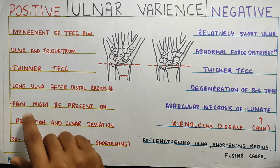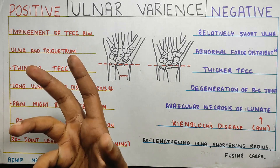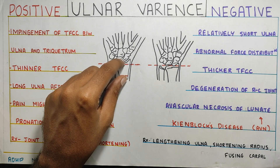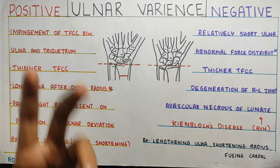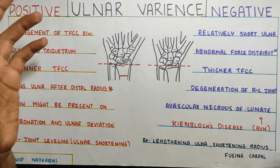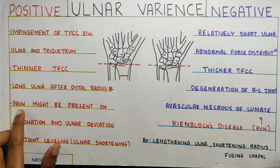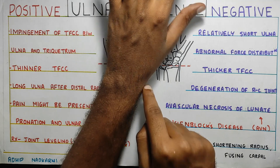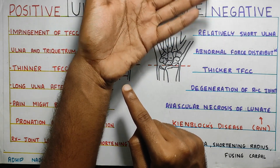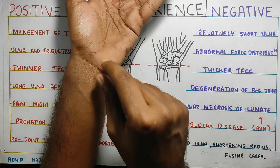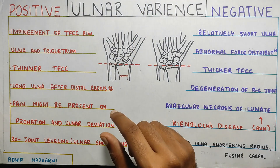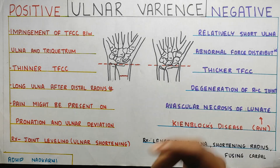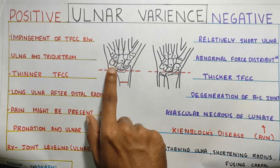In positive ulnar variance, there is a long ulna, which can be caused by a distal fracture of the radius — if the radius fractures, the height of the radius may reduce and the ulna looks relatively higher. This can cause pain on pronation and ulnar deviation. Because the ulna is higher up, structures in that region get compressed. Treatment would be joint leveling through surgery by shortening your ulna.